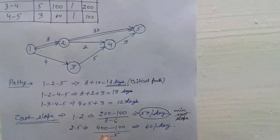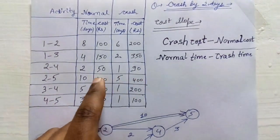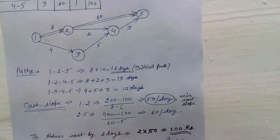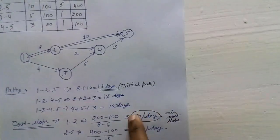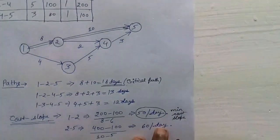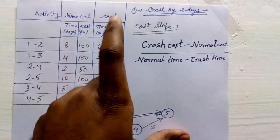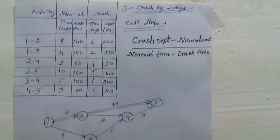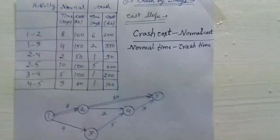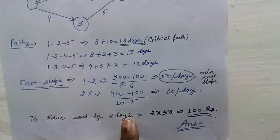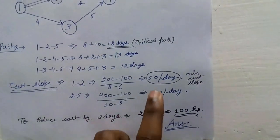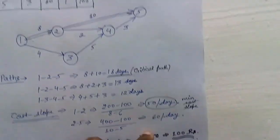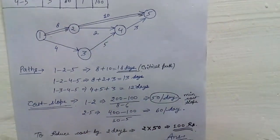The cost slope for activity 2-5 is 60 per day. Then you take the minimum cost slope, which is 50 per day. The question states the project can be crashed by a maximum of 2 days. So the additional crashing cost is 2 × 50 = 100 rupees. This means you need to bear 100 rupees extra to complete the project in 16 days instead of 18.